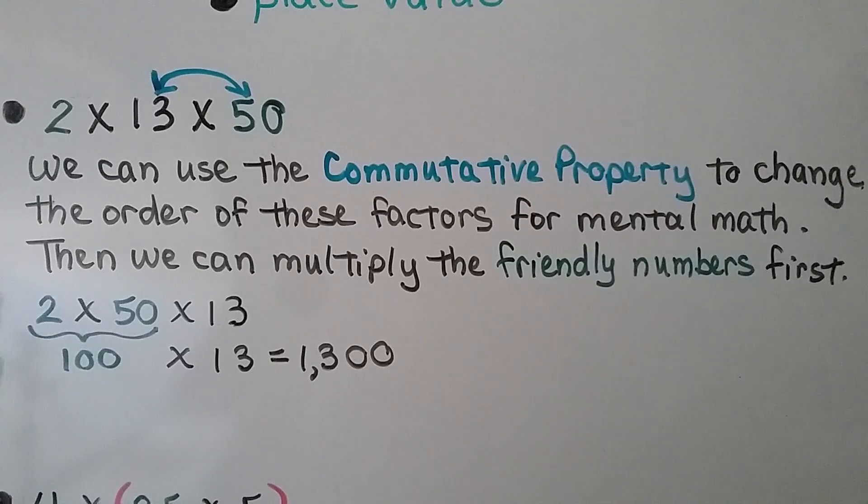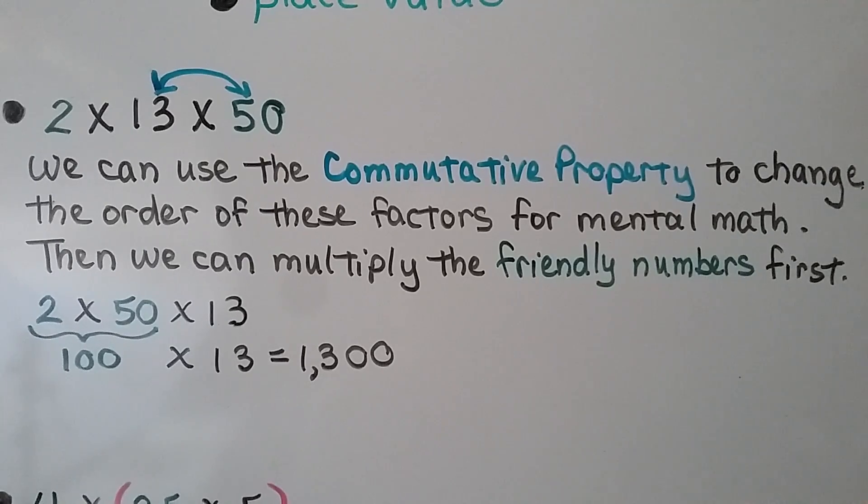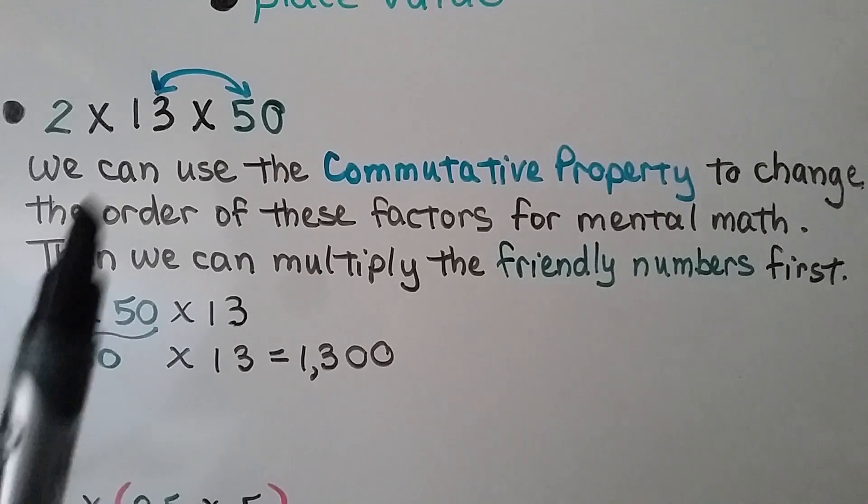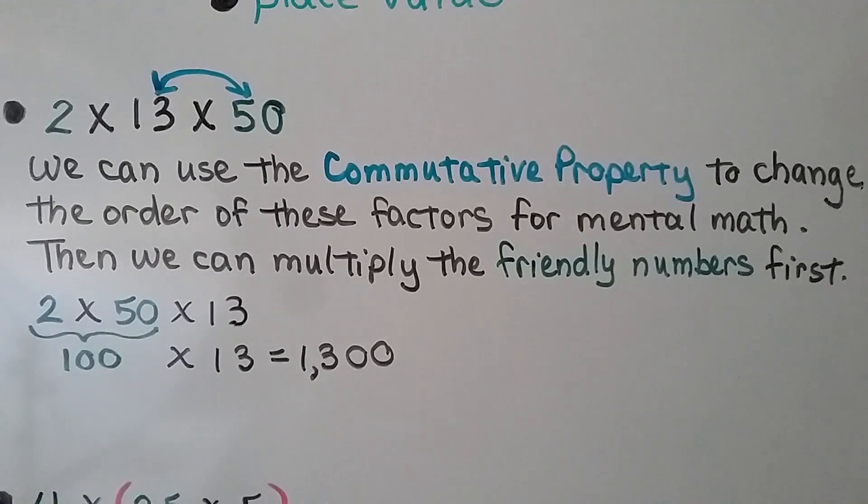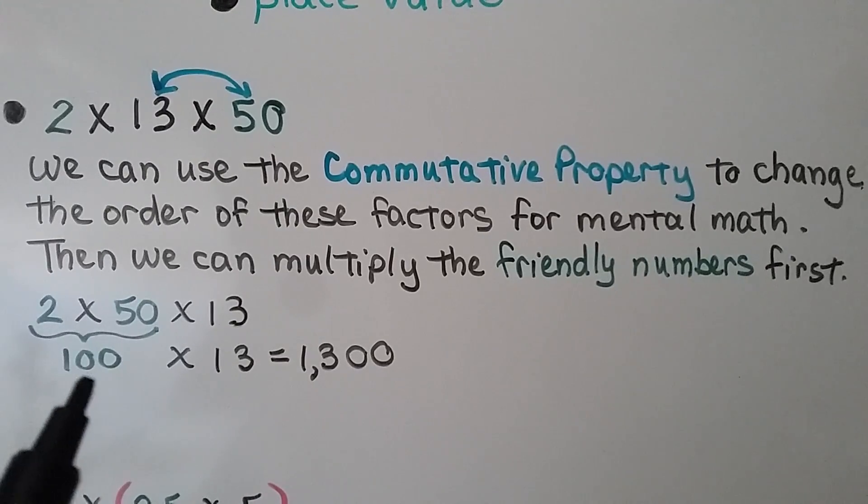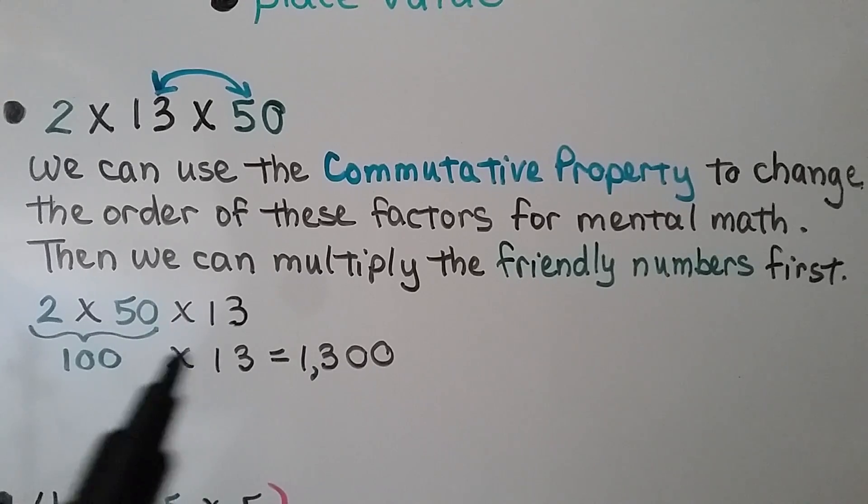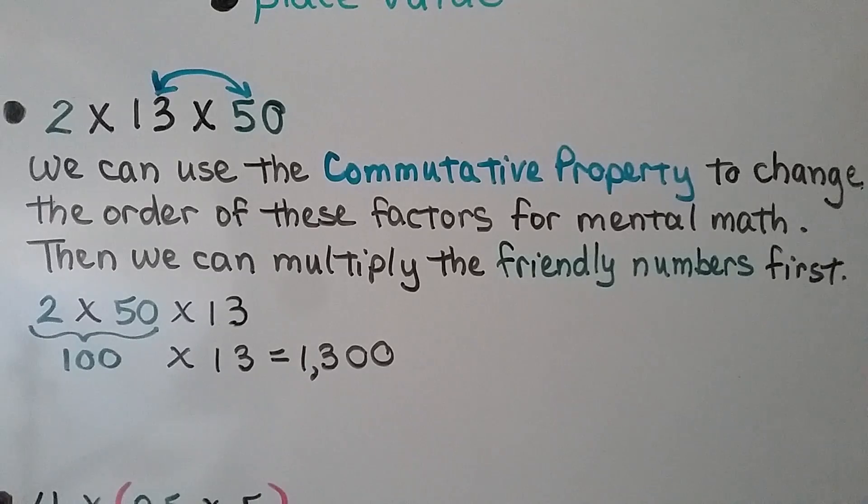Here we have the equation 2 times 13 times 50. We can use the commutative property to change the order of these factors for mental math. Then we can multiply the friendly numbers first. We can do 2 times 50, which is 100, then we can multiply it times 13. 100 times 13 is 1,300.